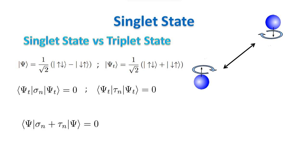However, a big difference comes when we evaluate the expectation value of the sum of sigma and tau along any axis. For the singlet state, we get a zero expectation value also in this case. We say that we have a total spin equal to zero. This means that the singlet state is invariant under rotations — you can rotate the system in space as much as you want, and you get always the same state back. This is a remarkable feature of the singlet state that makes it ideal for some experiments.